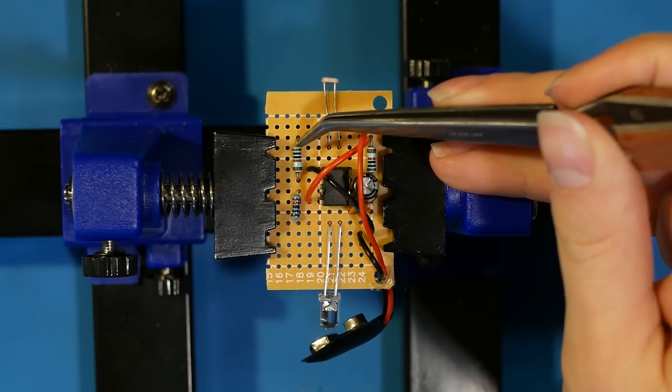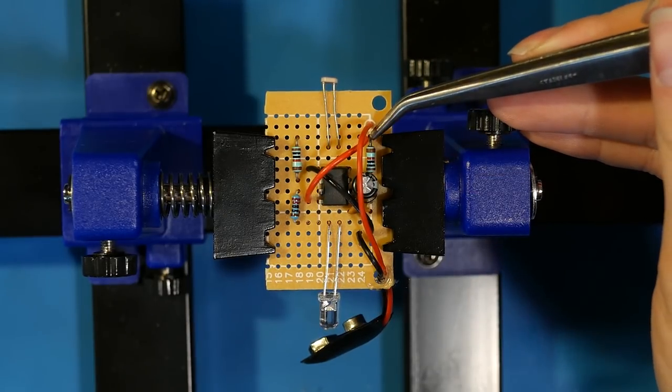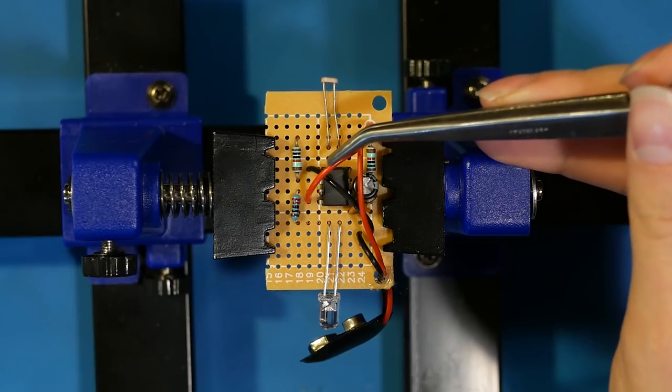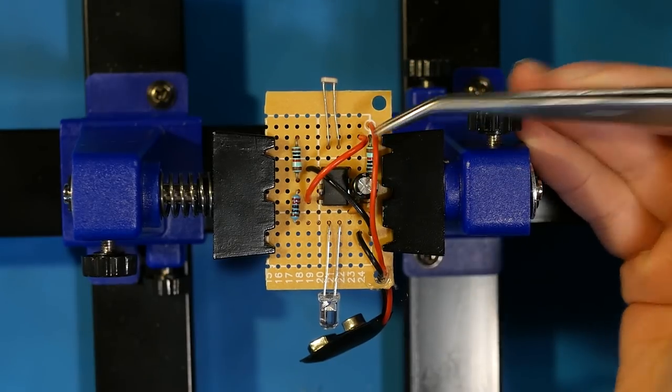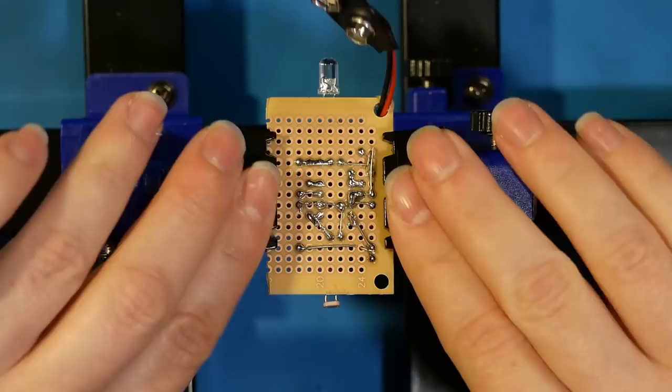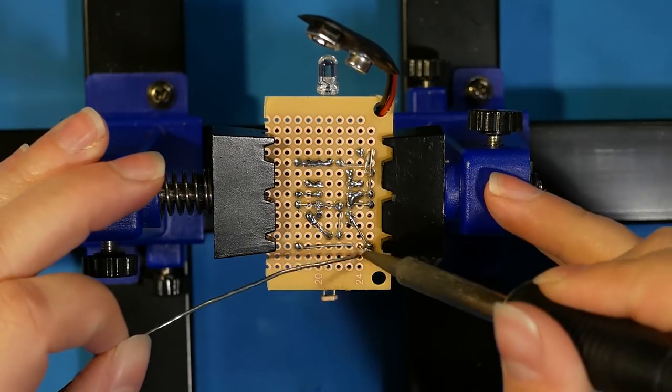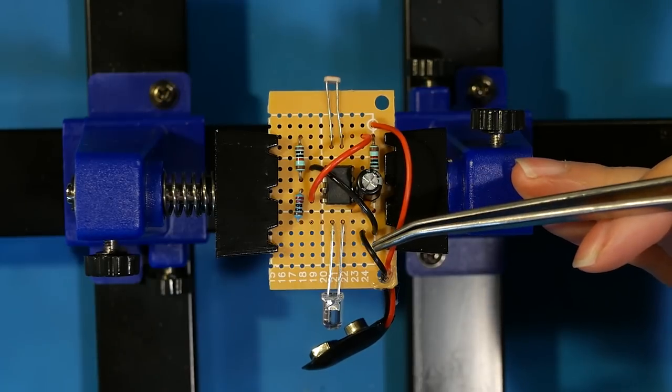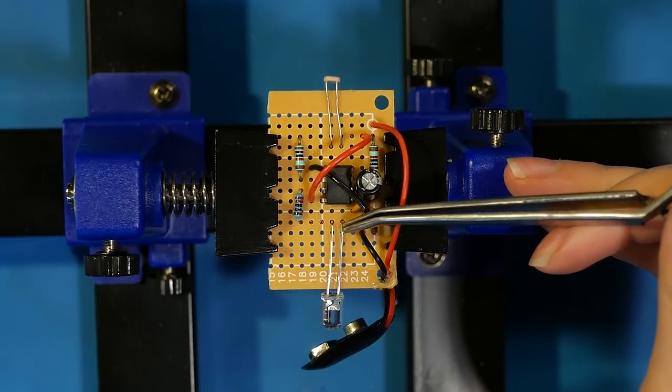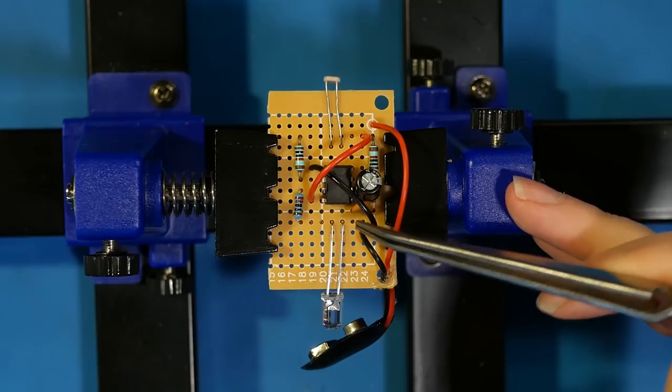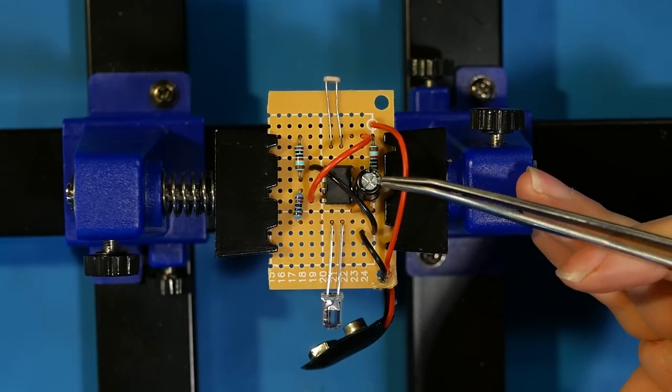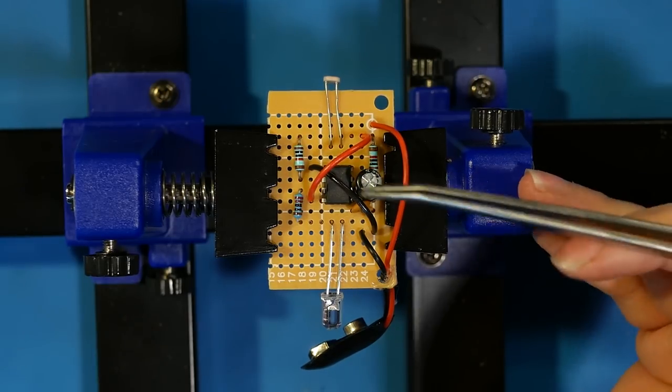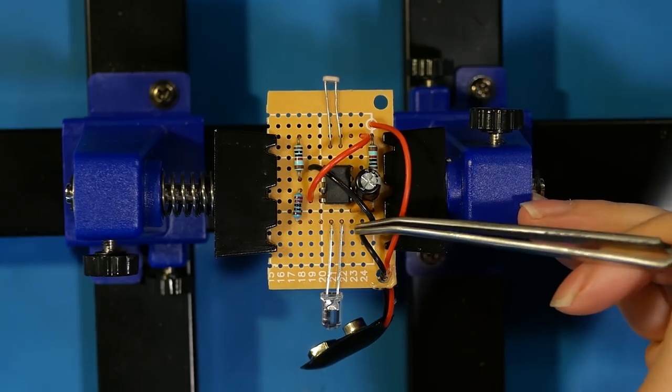All the VCC connections get soldered together. Pin 2's 10 kilo-ohm resistor. Pin 7's 10 kilo-ohm resistor. The red wire from pin 4. Pin 8. And the red wire from the 9-volt battery snap. And all the ground connections get soldered together. The negative lead of the LED. The 0.01 microfarad capacitor. The 100 microfarad capacitor. The black wire from pin 1. And the negative lead from the 9-volt battery snap.